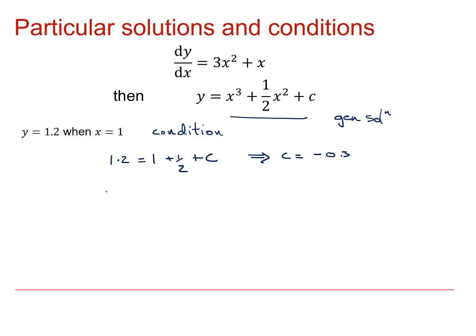I get a solution: x cubed plus 1 half x squared minus 0.3. And this is called a particular solution. And it satisfies this condition.